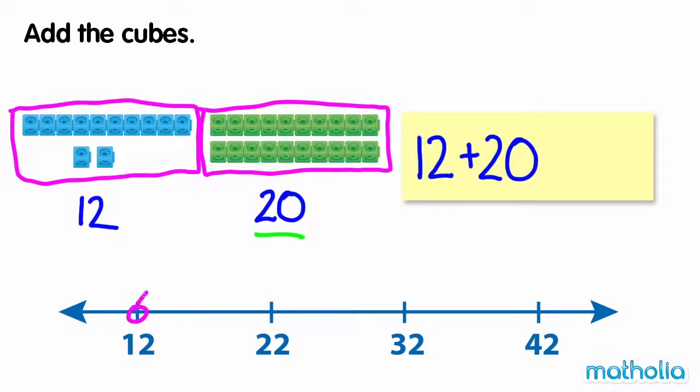12, 22, 32. So 12 plus 20 equals 32. There are 32 cubes.